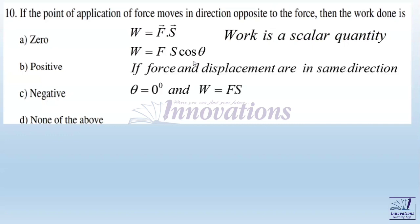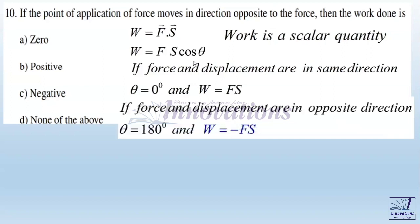If the force and displacement are in same direction, then theta is zero and cos theta becomes one, so the work becomes F times S, a positive quantity. But if the force and displacement are in opposite direction, the angle theta becomes 180 degrees. Cos 180 is minus one, then the work becomes minus FS, a negative quantity.